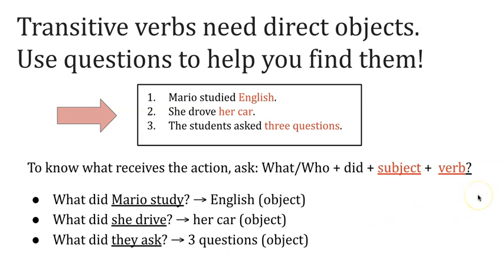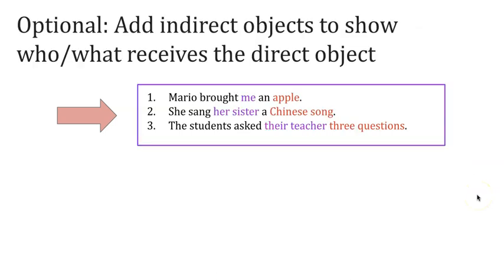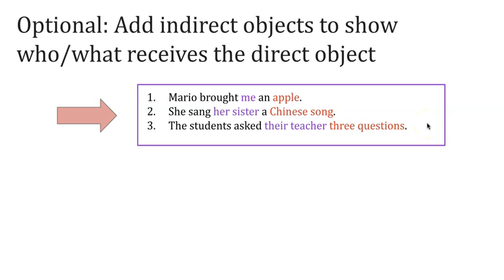You can use that question to help find direct objects. If you want to add more information, you can add indirect objects to show who or what receives the direct object. For example: 'Mario brought me an apple' — 'me' is the indirect object because 'me' receives the apple. 'She sang her sister a Chinese song' — 'Chinese song' is the direct object; 'her sister' received it, so 'her sister' is the indirect object. 'The students asked their teacher three questions' — 'questions' is the direct object; the teacher received the questions.